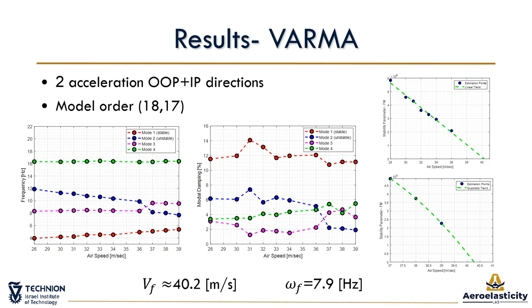Here we can see the results using the VARMA model with acceleration responses. The model order selection procedure yields a model order of 18,17. After classifying the first four modes, we see that the two flutter modes approach each other, and the flutter margin predicts flutter at 40.2 meters per second with a flutter frequency of 7.9 Hz.